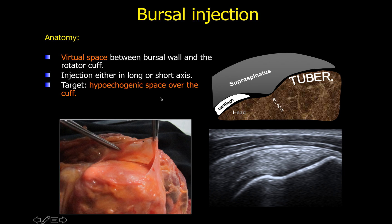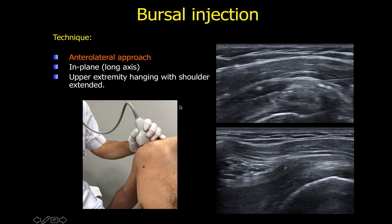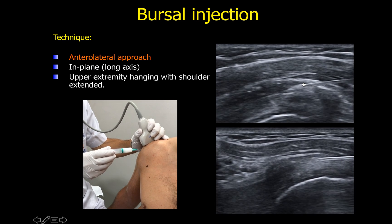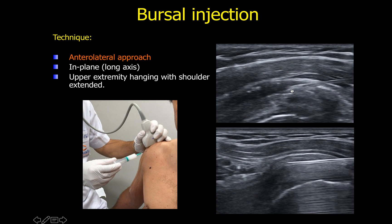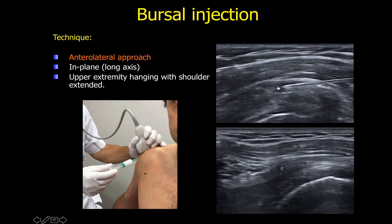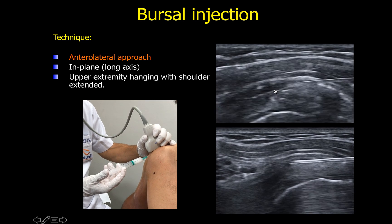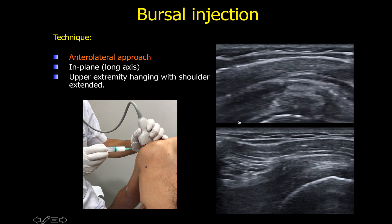Bursal injections are straightforward and frequently performed. The target is the virtual space between the bursal wall and the rotator cuff — the hyperechoic space above the cuff and below the bursa. In long-axis view, the needle is placed into this hypoechoic space, and correct positioning is confirmed before injecting typically seven to ten milliliters of anesthetic, with the full volume delivered inside the bursa.